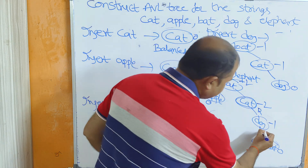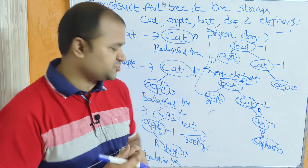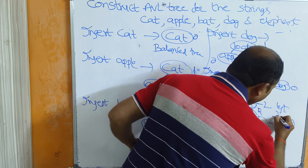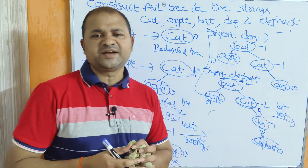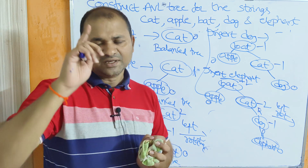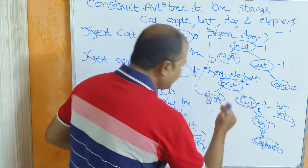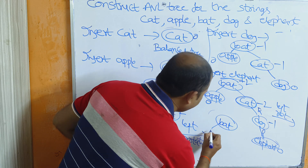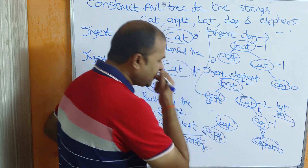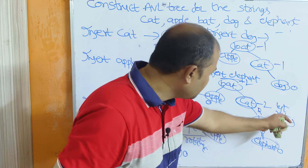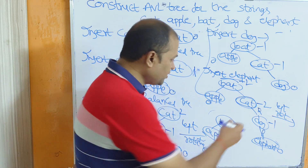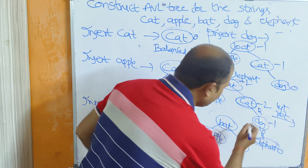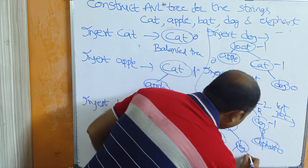This is an RR rotation, which is a single rotation — specifically a left rotation. For single rotations, we perform the rotation directly on the unbalanced node, which is cat. Cat is rotated to the left. Dog becomes the new local root, dog's left child is cat, and dog's right child is elephant. Bat's right child is now dog.